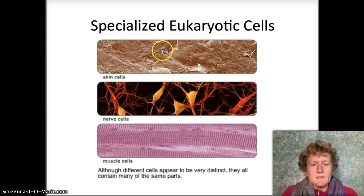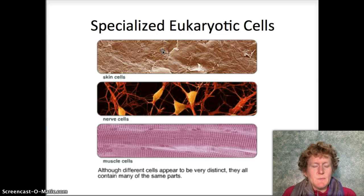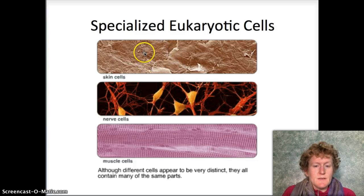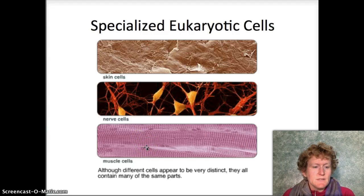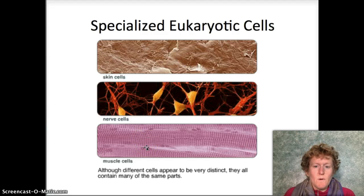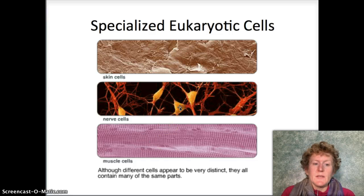In eukaryotes, there are different kinds of cells that specialize. For example, in humans we have skin cells, nerve cells, and muscle cells. These different kinds of cells look different because they perform different functions. Remember: structure relates to function.